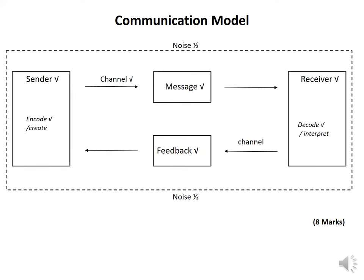Let us look at the communication model. We have spoken about the communication process: the sender creates the message and sends it through a channel to the receiver. Looking at the communication model, the sender is the main person — it starts from the sender. From the sender, an arrow goes to the message via the channel. A channel can be a telephone, voice using vocal cords, or face-to-face communication.